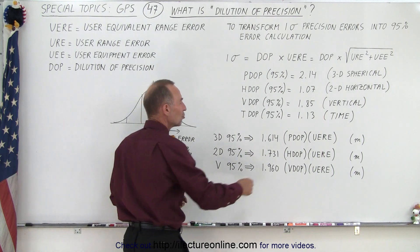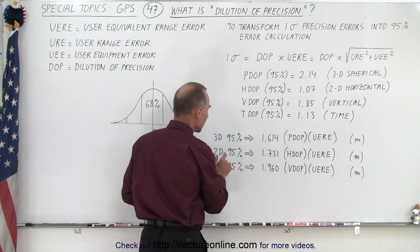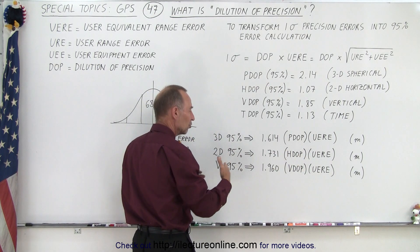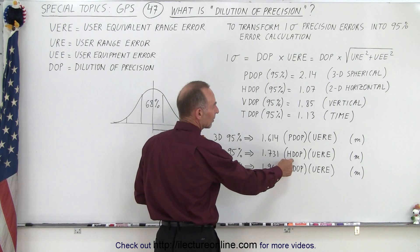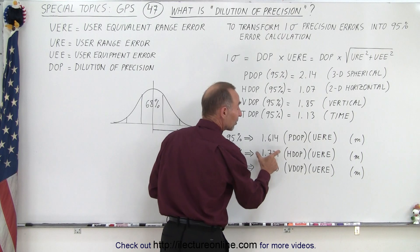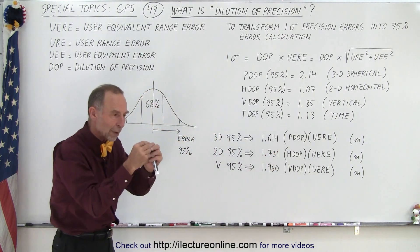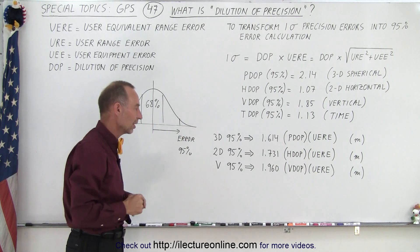If we use the HDOP, then we multiply the UERE, and if we want the two-dimensional 95% range of our error measurements, then we can say that if we multiply the HDOP times the UERE, and multiply it times 1.731, we end up with a range value so that we know that 95% of our measurements will fall within that range value.